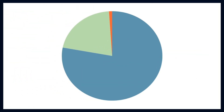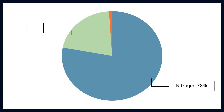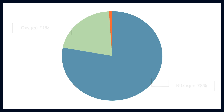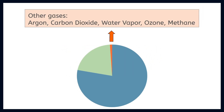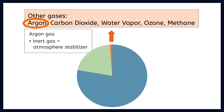If you're keeping up with the math, our atmosphere is 78% nitrogen, 21% oxygen — that's 99%. So we're about done, right? Well, actually, the remaining 1% of gases are super important, even if they are small in volume. Some of these gases are also inert, like argon. Remember, these inert gas atmosphere stabilizers are good.